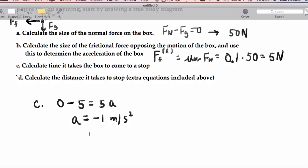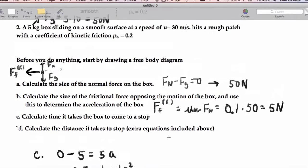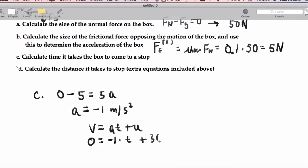And now we can use SUVAT. So V equals AT plus U. 0 equals negative 1 times the time plus the initial speed of 30 meters per second.